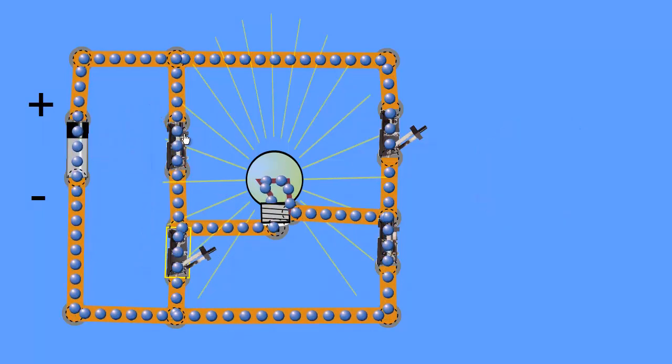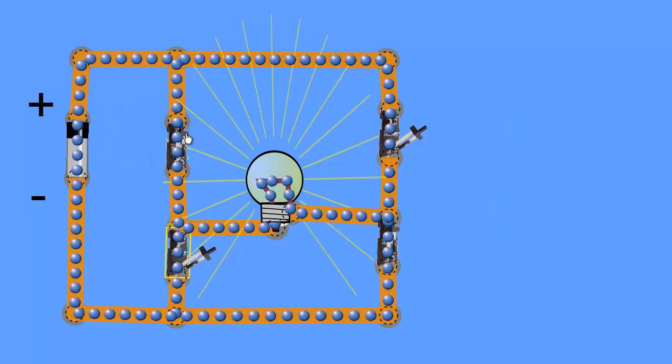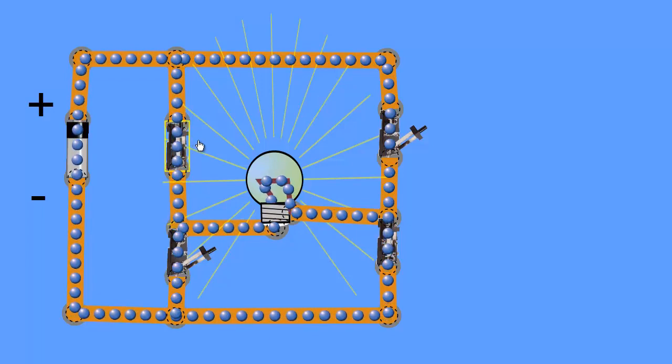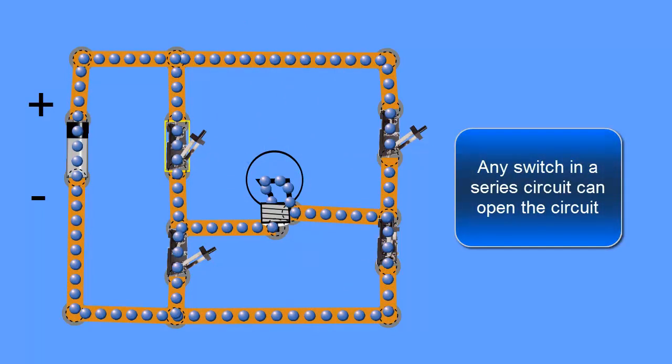Now if we open any one switch, if we've only got two switches closed, and we've got current going through the load, if we open any one switch, the thing's going to shut off. And that's because we've interrupted. We've got two switches in series, and if we open any one switch in a series circuit, the load's going to shut off.